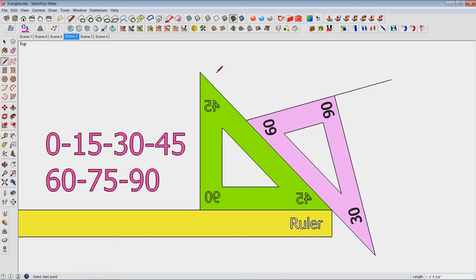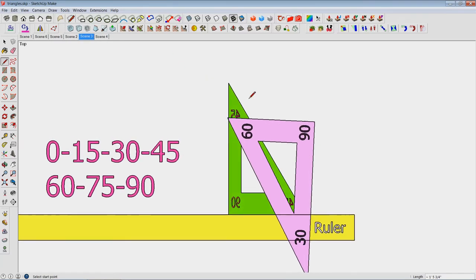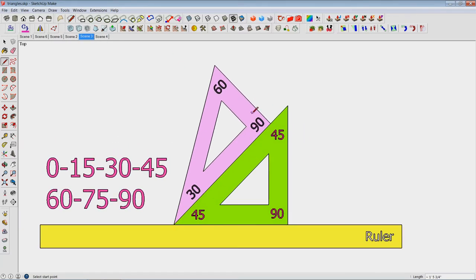What about a 75 degree angle? Put the triangles together a different way. 30 plus 45 gives you 75 degrees.